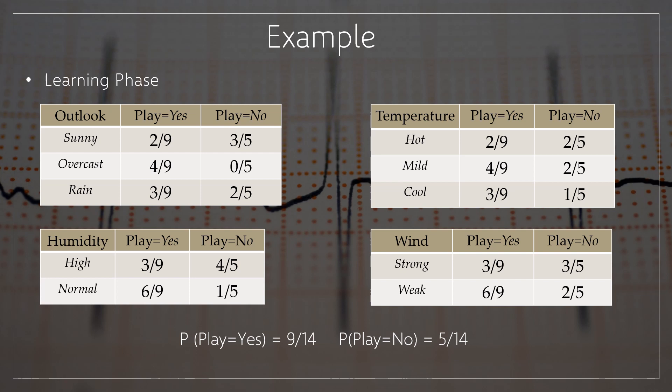Moving on to temperature: for temperature equal to hot, applying the same formula, play equal to yes equals 2 by 9 and play equal to no equals 2 by 5. For temperature equal to mild, play equal to yes equals 4 by 9 and play equal to no equals 2 by 5. For temperature equal to cool, play equal to yes equals 3 by 9 and play equal to no equals 1 by 5.